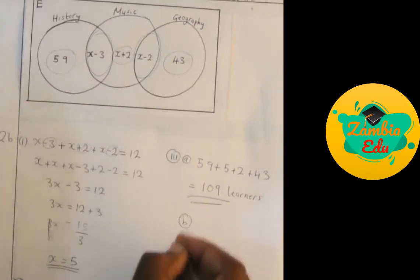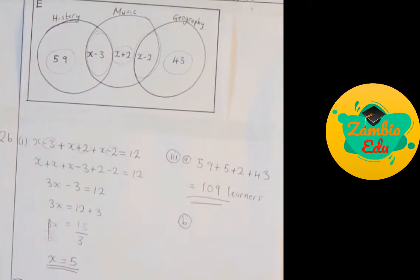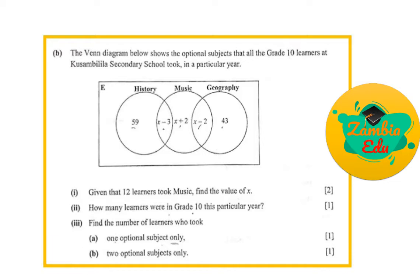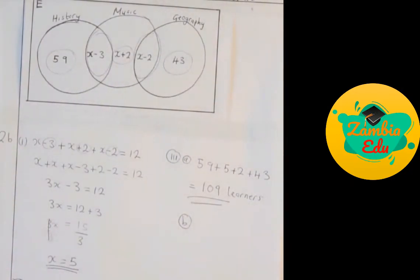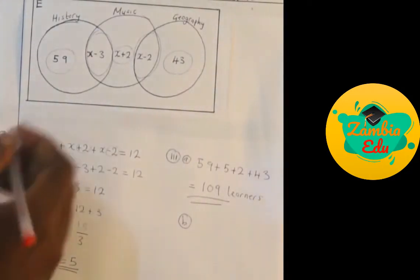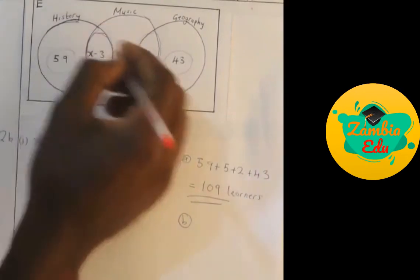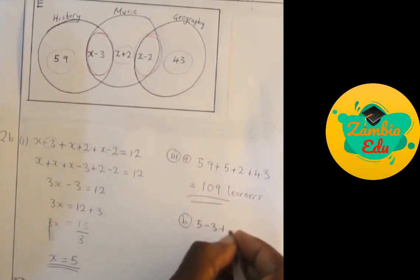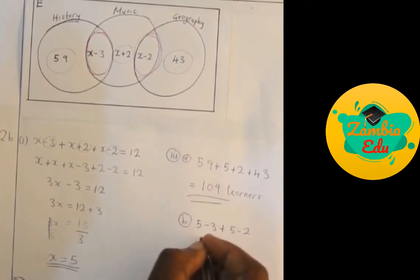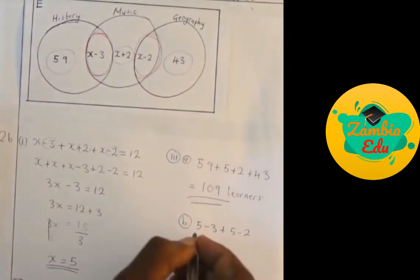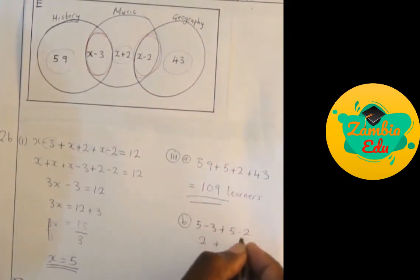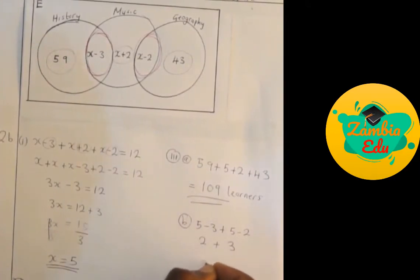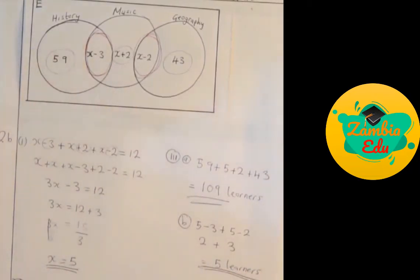This answers part 3b: find the number of learners who took two optional subjects only. We count the intersection regions only — that is (x minus 3) plus (x minus 2), substituting x equals 5: 5 minus 3 plus 5 minus 2, which gives 2 plus 3, so 5 learners is our final answer.